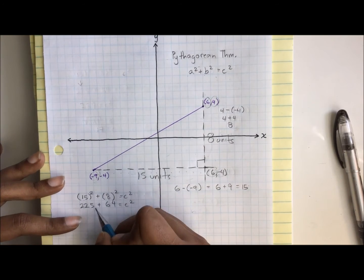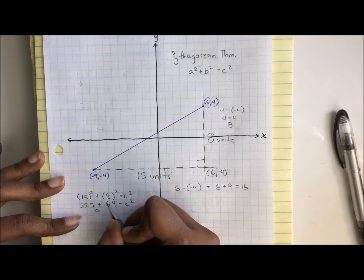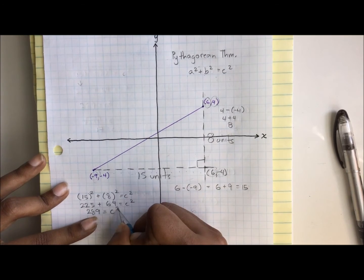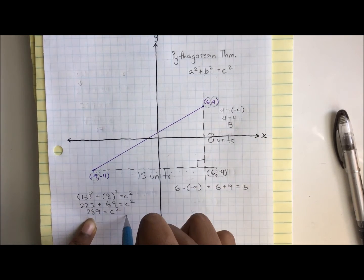Let's figure that out. 15 squared is 225 plus 8 squared is 64 equals c squared. 225 plus 64, let's see, 5 and 4 that's 9, 62 is 8, so 289 equals c squared.